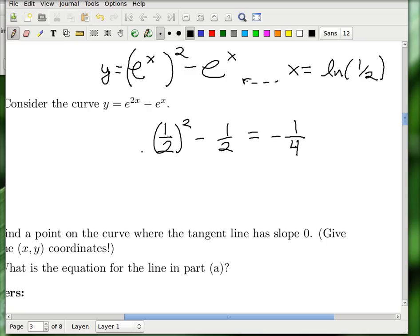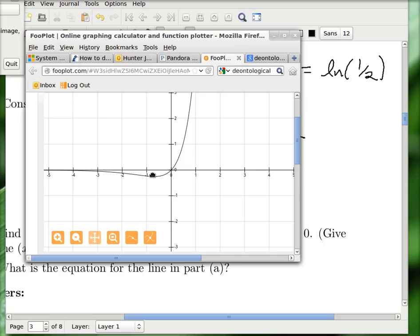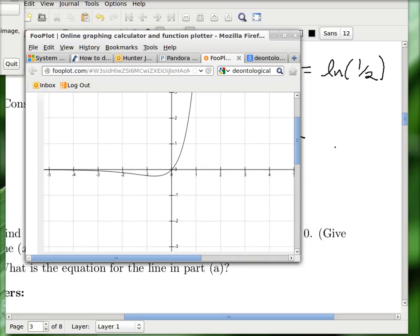So now I know what the xy coordinates are. The xy coordinates are natural log of 1 half, comma, minus 1 fourth. And if you put natural log of 1 half in your calculator, and consider this graph again, it's about right. So this is minus a quarter, that looks dead on on the y-axis there.